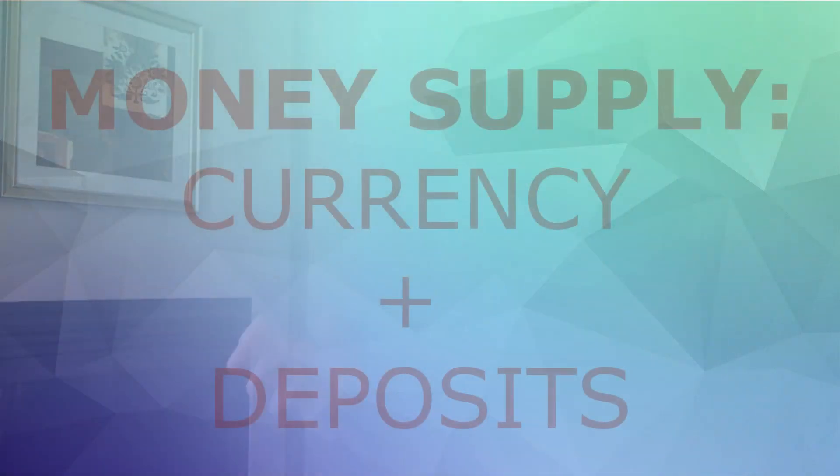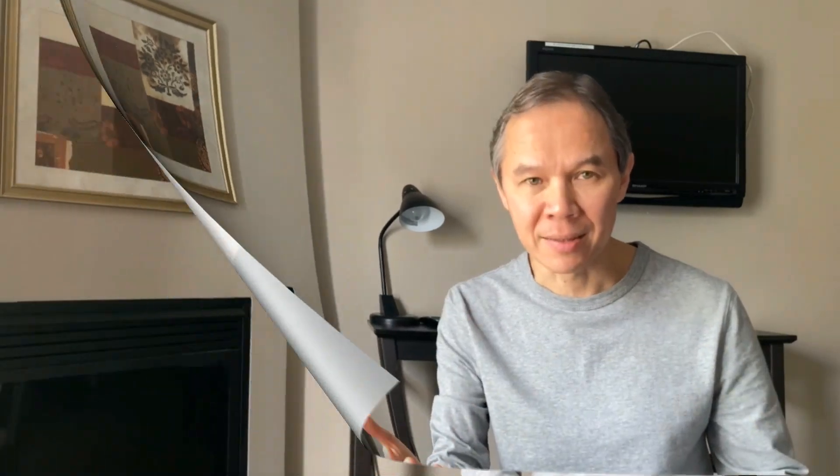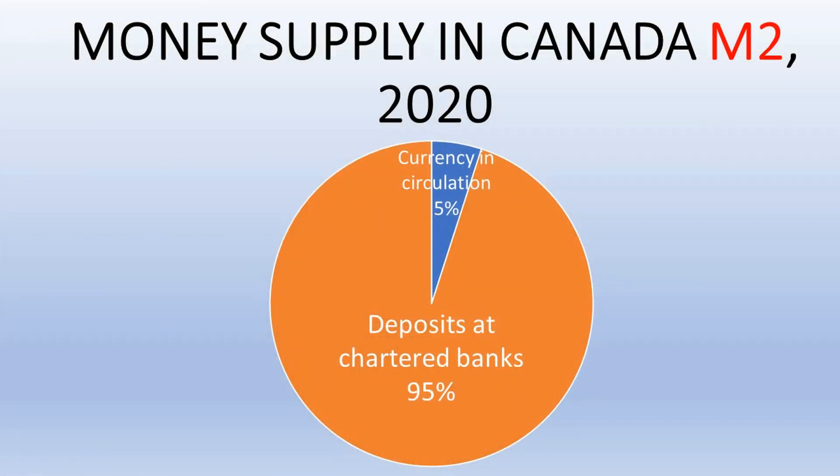The next idea of monetary economics is money supply. Money supply is currency plus deposits — coins and banknotes plus our deposits in banks. Most of our money supply is not banknotes; banknotes take a tiny fraction, about 8%. Most of our money supply is bank deposits — ones and zeros in bank records. Most of our money supply is digital.